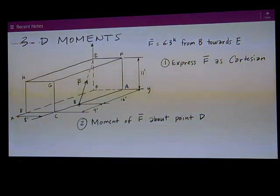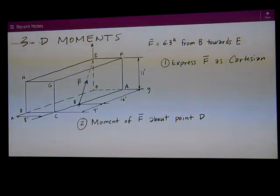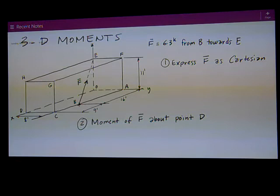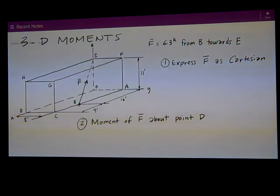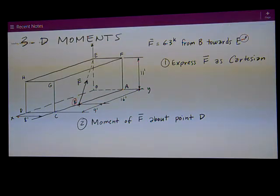This is David Spears, civil engineering instructor at Texas Tech University, talking about CE2301 statics. We've got a 3D moments problem here. There's a rectangular box to give us some coordinate points and a force, 6.3 kips, acting from point B towards point E. Point B is down here and it's acting towards E up here in the upper left-hand corner.